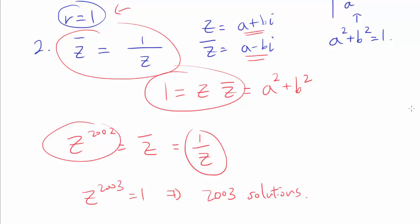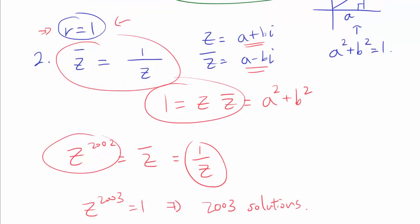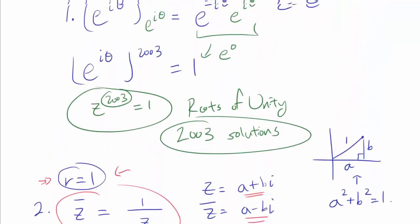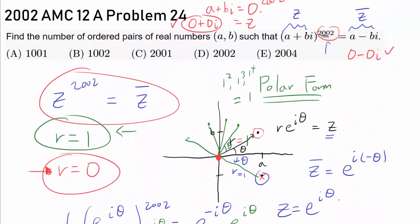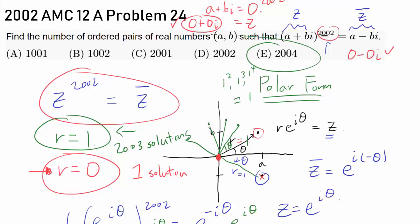So no matter how you go about it, when R = 1, we have 2003 solutions. We have one solution when R = 0, and 2003 solutions when R = 1. So the final answer is 2004.